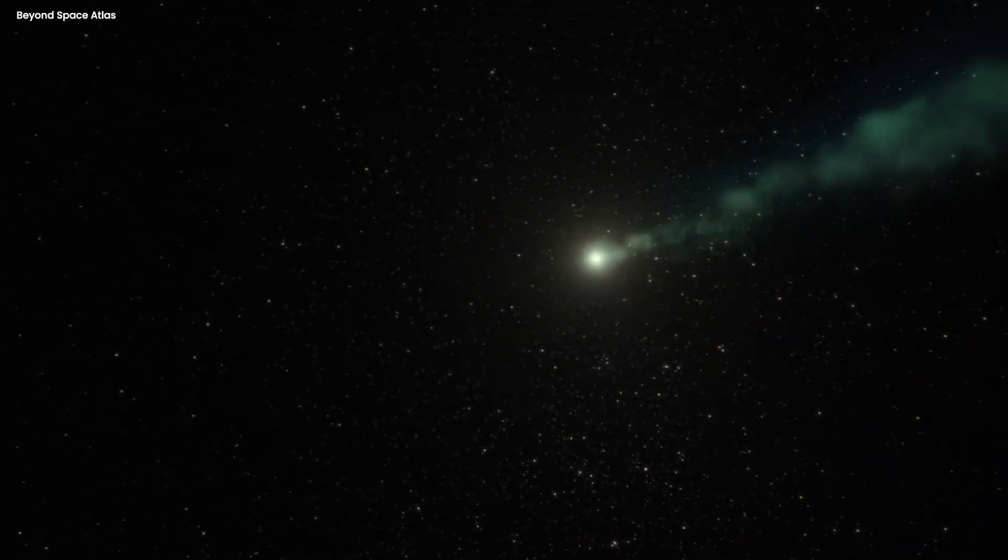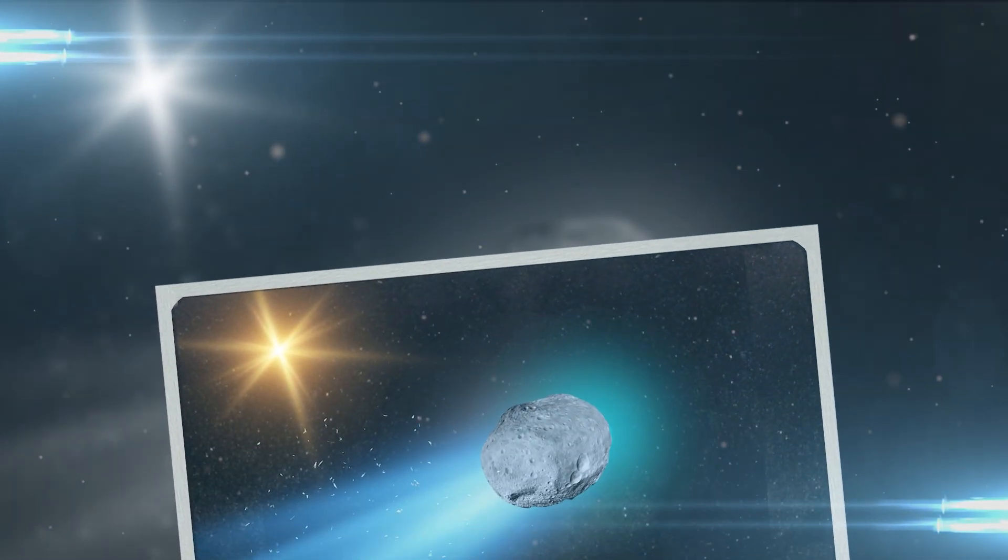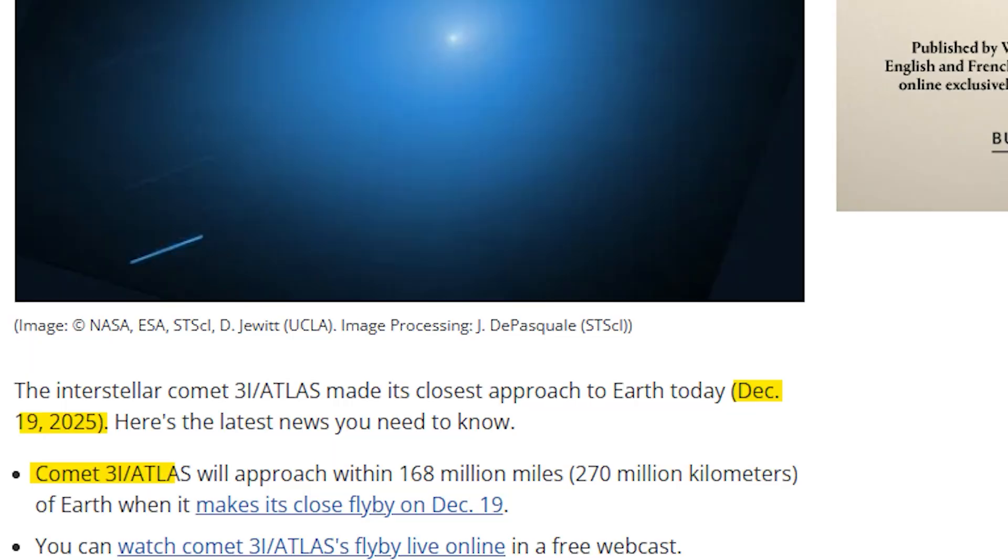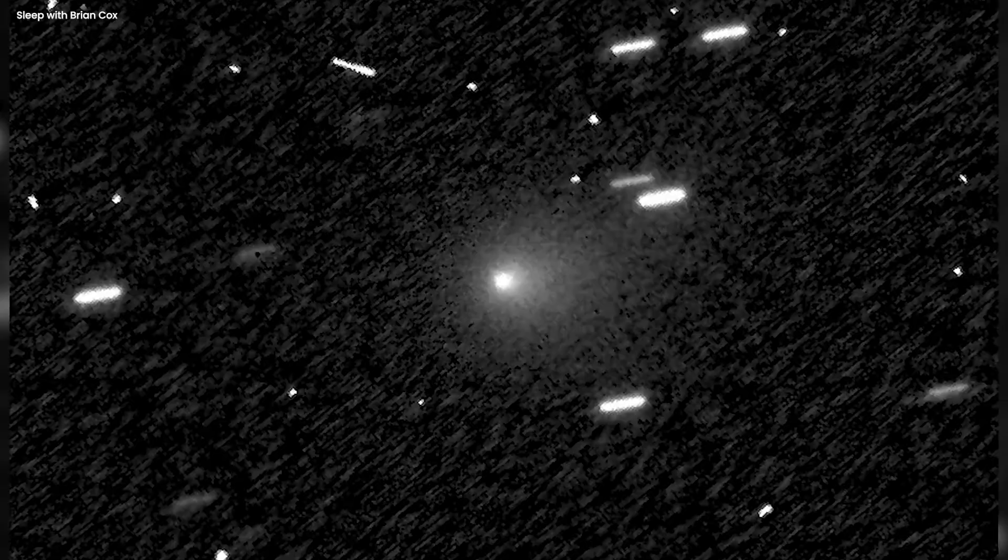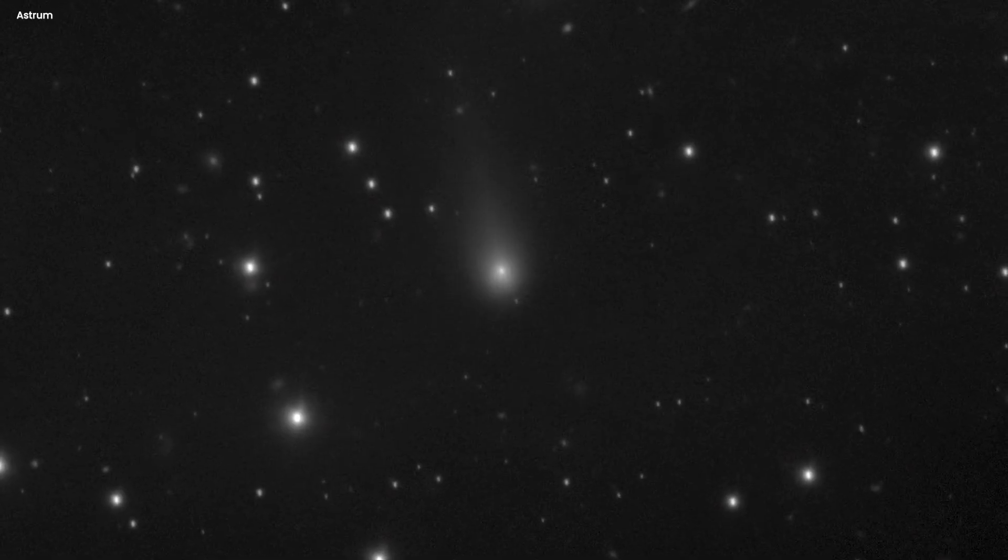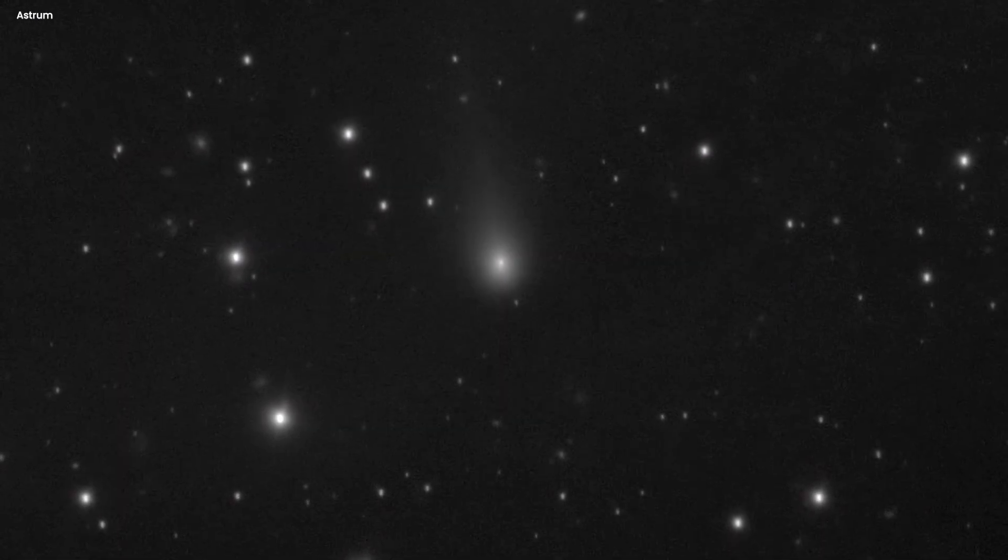December 19th was supposed to be the big moment, but the object was on the complete opposite side of the Sun, 168 million miles away. We thought we were the target, but we weren't. So if it didn't come here for Earth, then what did it come here for?